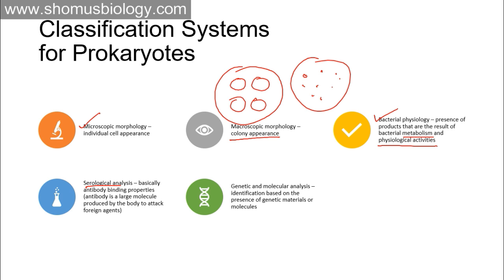Lastly, there is genetic and molecular analysis — identification based on the presence of genetic materials or molecules. Biochemical properties are also tested, playing a very important role in identifying bacteria using commonly used tests such as staining processes and biochemical tests like IMVIC tests. If you are from a microbiology background, you already know about these tests and have probably done them in practicals.